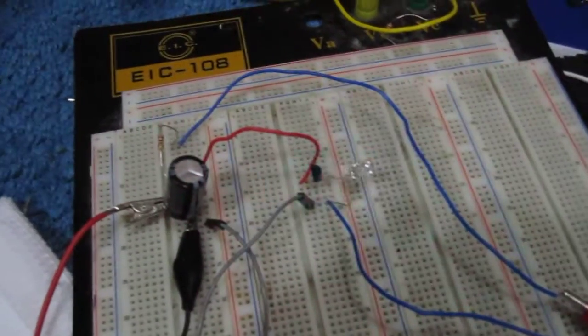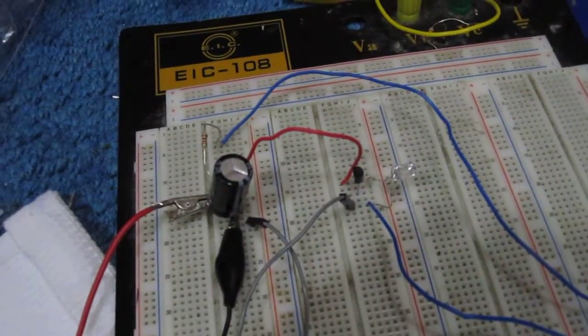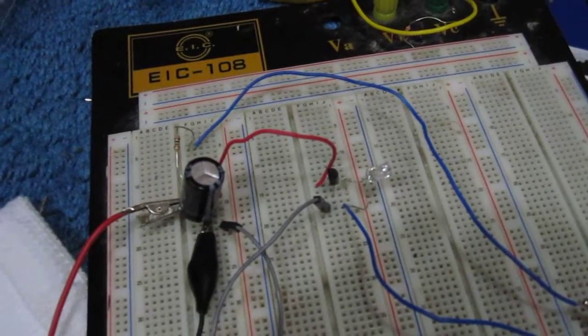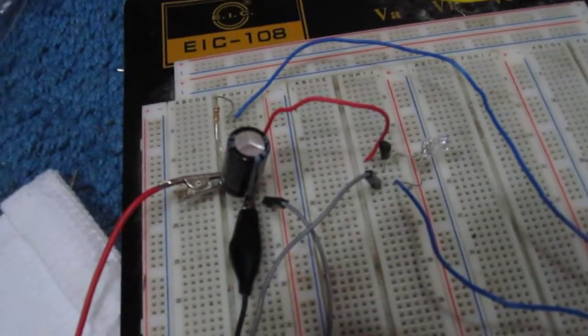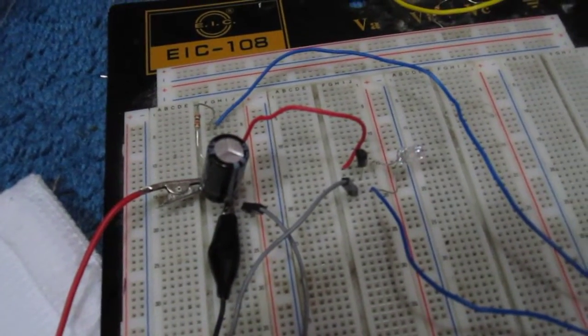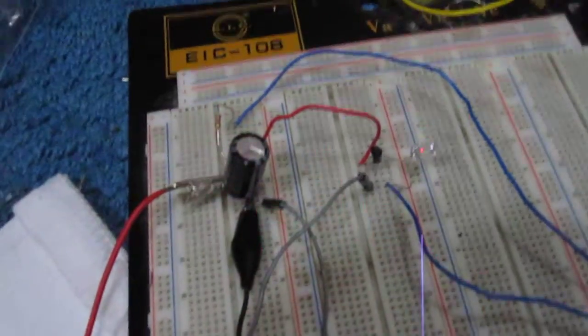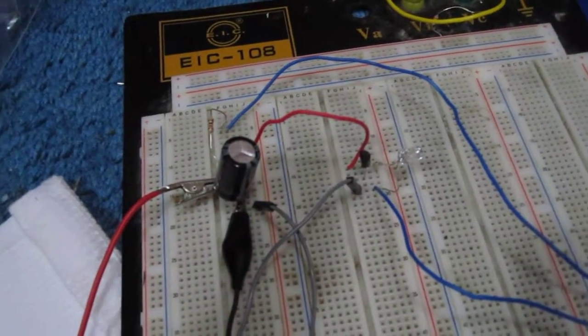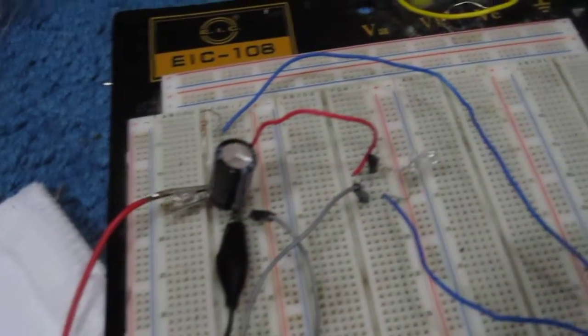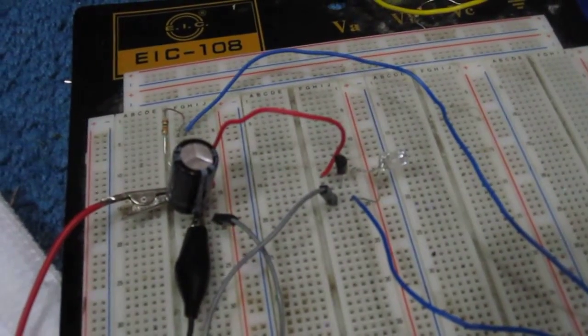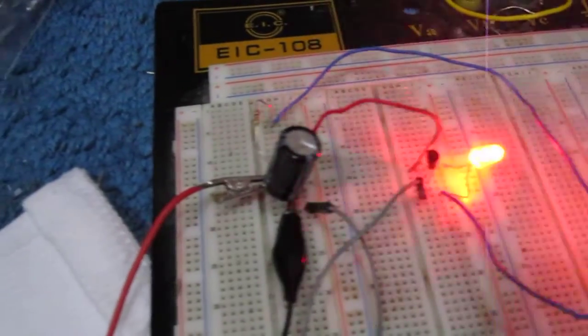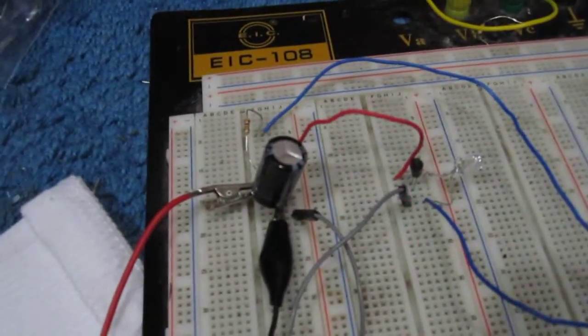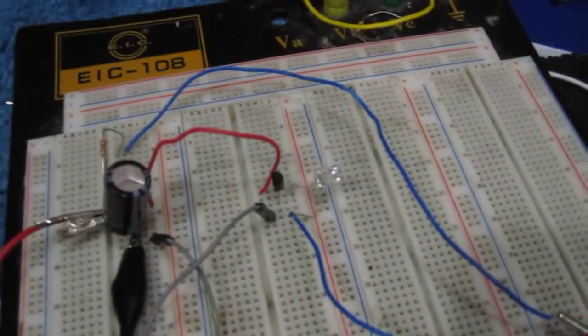How this circuit works is through the charging and discharging of a capacitor. Once the capacitor reaches a certain value, it creates the breakdown point for the NPN transistor, and the transistor begins to conduct current across.